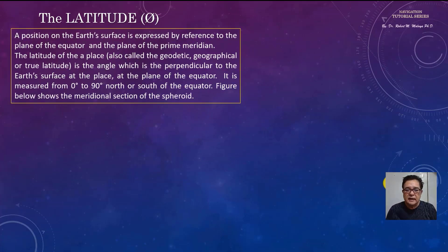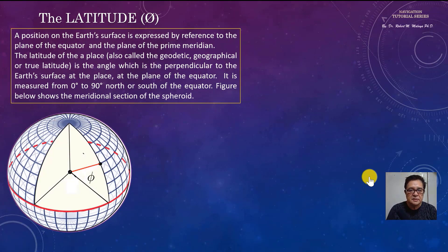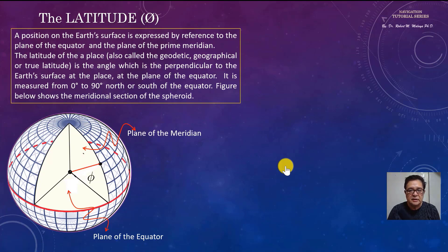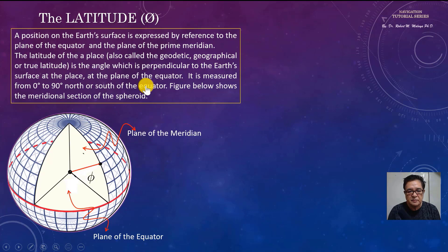The latitude is a position or a point on the Earth's surface expressed by reference to the plane of the equator and the plane of the primary meridian. The latitude of a place, also called the geodetic, geographical, or true latitude, is the angle which is perpendicular to the Earth's surface at the place at the plane of the equator. It is measured from zero to 90 degrees north or south of the equator.